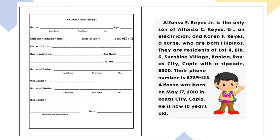When you say middle initial, it's the beginning letter only. When you say middle name, you have to spell out your middle name. Then fill in citizenship, nationality, date of birth, sex, place of birth, home address, zip code, telephone number, name of his father, occupation, name of his mother, occupation, and the signature over printed name, and the date today.